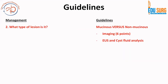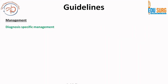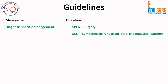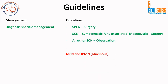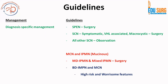To determine lesion type, the key is ruling out mucinous versus non-mucinous based on six imaging points and cyst fluid analysis. For diagnosis-specific management: SPAN requires surgery; serous cystic neoplasms require surgery if symptomatic, VHL-associated, or macrocystic — otherwise, observe. For mucinous neoplasms, main duct IPMN and mixed IPMN both require surgery. Branch duct IPMN and MCN surgery is indicated for high-risk and worrisome features.